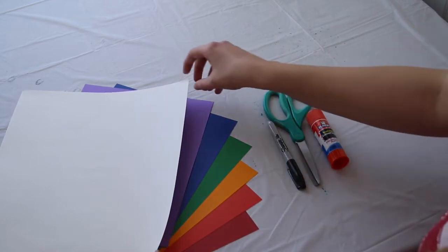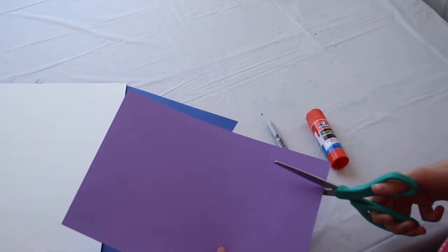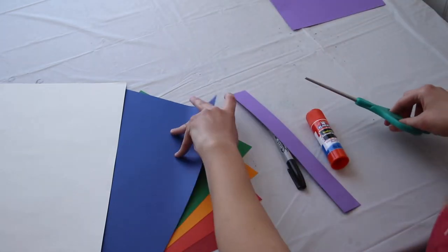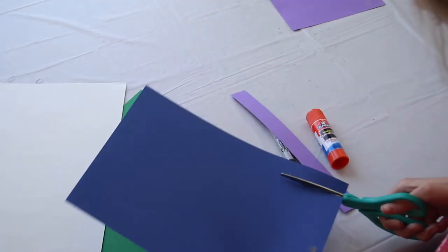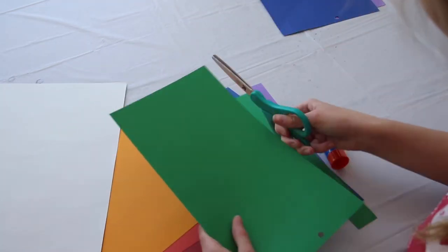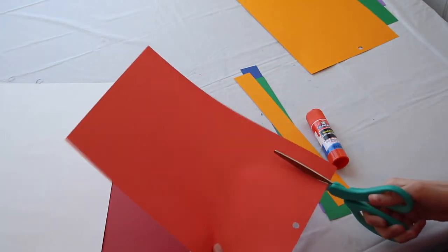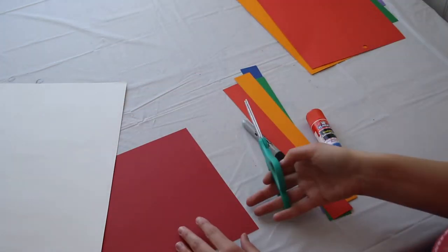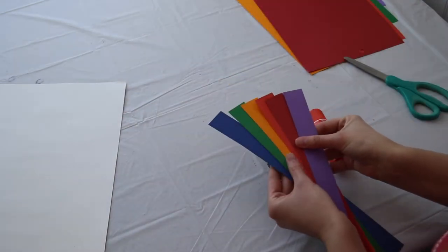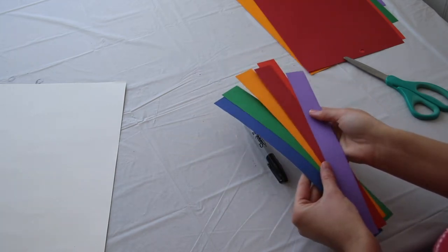So the first thing you're going to do is you're going to take your rainbow pieces of paper and you're going to cut out long strips. You can see that I cut them all to be about the same width. And now I have my rainbow stripes.